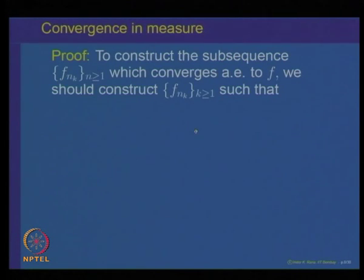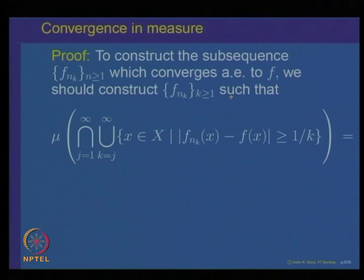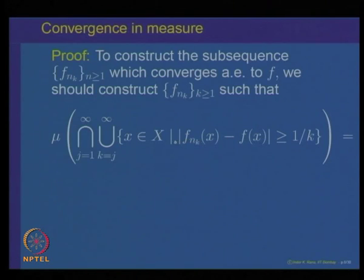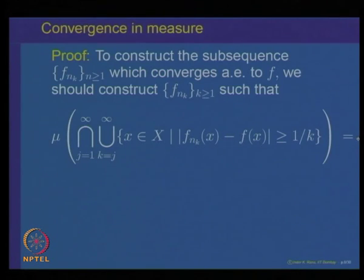Let us see a proof of this. To prove this, we are looking at how to construct a subsequence F_{n_k} which converges almost everywhere to F. We have to find F_{n_k} with the property that the measure of the set — the intersection over j from 1 to infinity of the union over k from j to infinity of points x where |F_{n_k}(x) - F(x)| > 1/k — must equal zero. We want a sequence F_{n_k} such that this measure of this set is equal to 0.